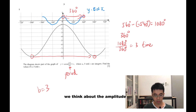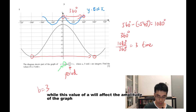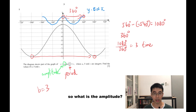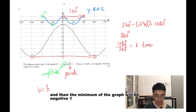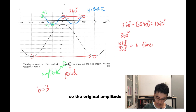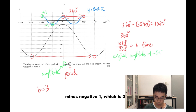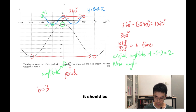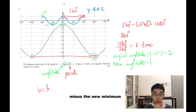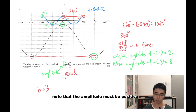Next, we think about the amplitude, which is the value of a. The value of a affects the amplitude of the graph. The amplitude is the maximum value of y minus the minimum value of y. For the original graph, the maximum is positive 1 and the minimum is negative 1, so the original amplitude is 1 minus negative 1, which equals 2. For the new graph, the maximum is negative 1 and the minimum is negative 9, so the new amplitude is negative 1 minus negative 9, which equals 8.